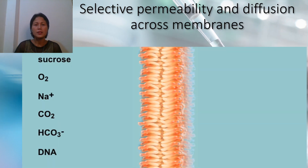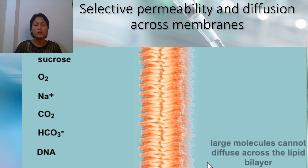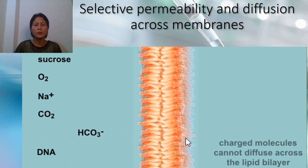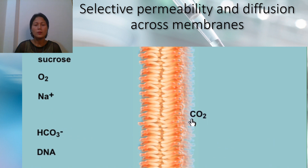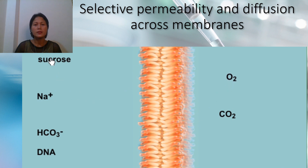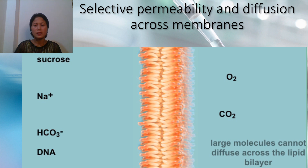Another characteristic of the cell membrane is its selective permeability. Considering molecules such as sucrose, oxygen, sodium ion, carbon dioxide, bicarbonate, and DNA: DNA is a large molecule, so it cannot diffuse. Bicarbonate is charged, so it cannot diffuse. Carbon dioxide can diffuse across. Sodium ion cannot because it's charged. Oxygen can, similar to carbon dioxide. Sucrose cannot because it's a large molecule.